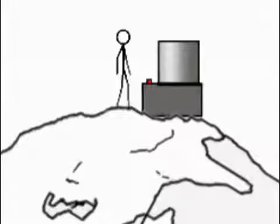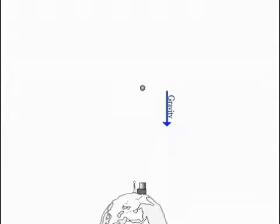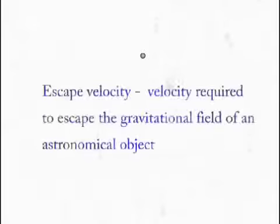Now if you shoot the projectile fast enough it will escape the earth's gravitational pull and will essentially keep rising forever. The velocity at which this is possible is called the escape velocity of the object and for the earth it's about 11 kilometers per second.